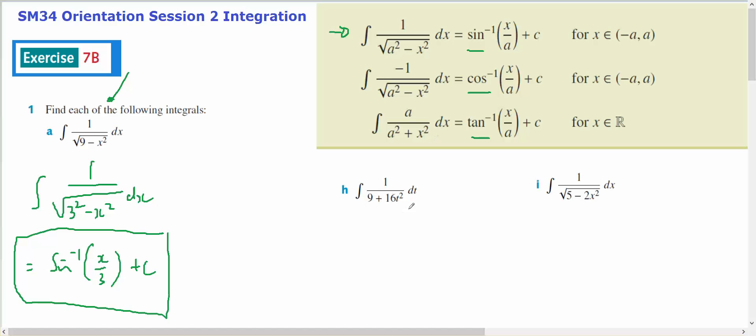Looking at the second one, it's about t and that's dt. I've got this over this, so I'm looking at this particular rule here because I don't have a square root on the bottom. I've got the integral of 1 on top of 3 squared plus 4t squared dt, because a squared will be 9, therefore a is 3.